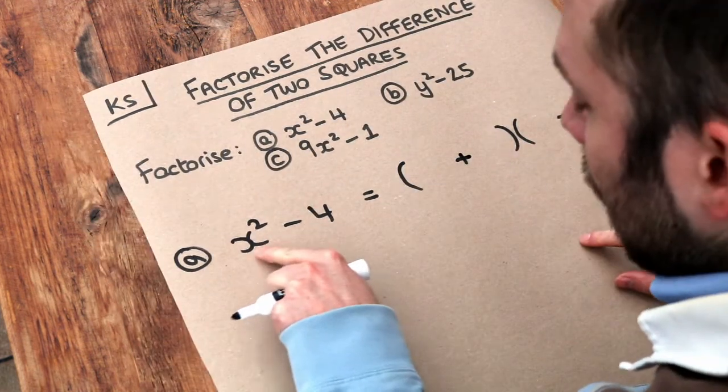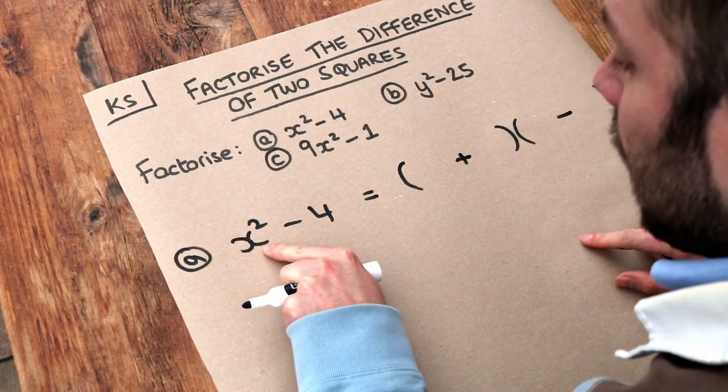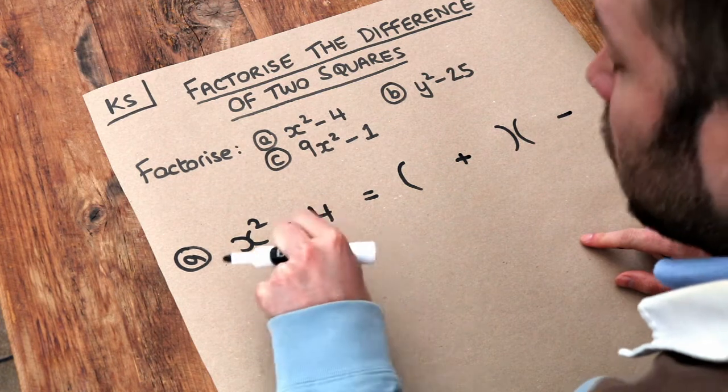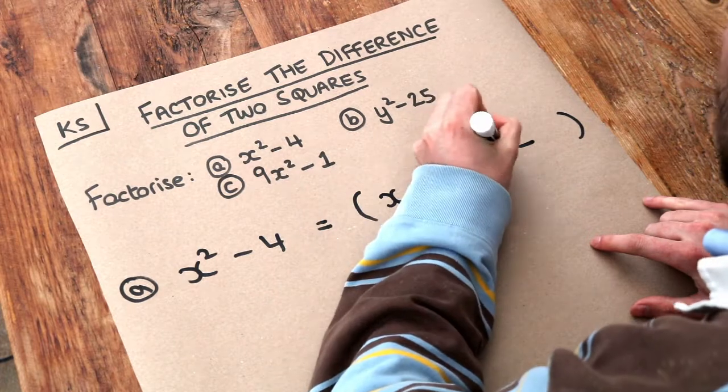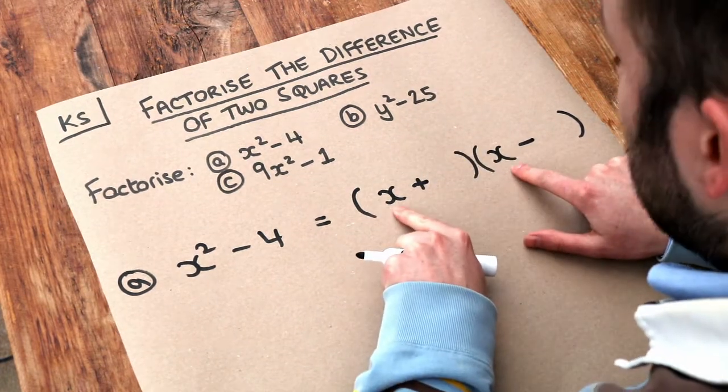Then what you do is take the first term and do the square root of it. What's the square root of x squared? What times itself gives you x squared? Well, it's x. x times x would give you x squared, so you put that as the first thing of each bracket.